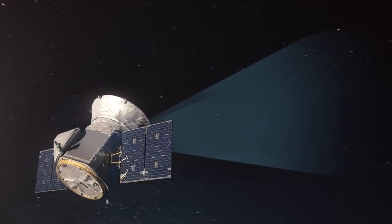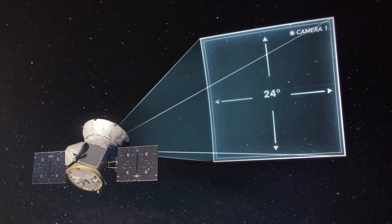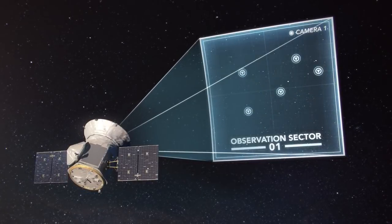Each of TESS' cameras has a 16.8 megapixel sensor covering a square 24 degrees wide, large enough to contain an entire constellation.